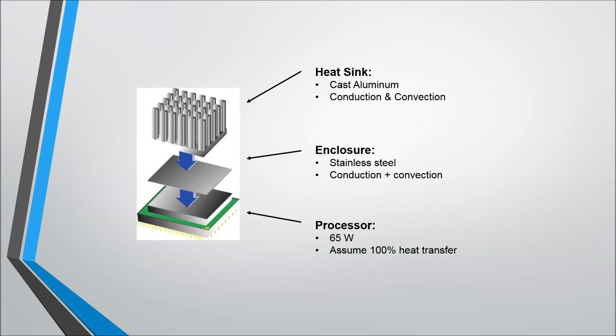Connected to the enclosure, we will have an aluminum heat sink which will also experience conduction and convection heat transfer. Finally, we must set our atmospheric conditions. We will assume a warm ambient temperature of 30 degrees Celsius. Additionally, we will assume that there is a fan cooling the heat sink which yields a convective heat transfer coefficient of 20 watts per meter squared Kelvin.